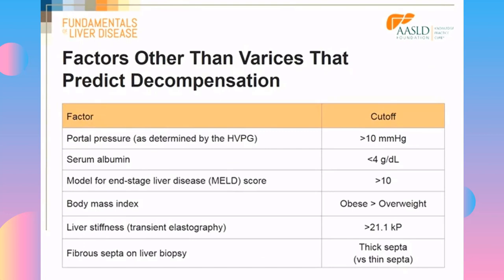Other factors have been identified that predict who may decompensate earlier, all in compensated patients. A portal pressure — as determined by the hepatic venous pressure gradient — at a cutoff of greater than 10, which is clinically significant portal hypertension, predicts who is going to decompensate sooner. Serum albumin less than 4, male sex, body mass index, liver stiffness at 21 kilopascals, and the thickness of fibrous septa on liver biopsy — with thick septa being a poor prognostic sign — are also markers that predict decompensation.